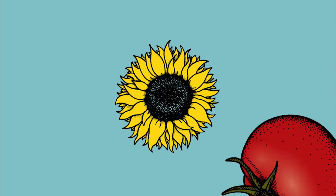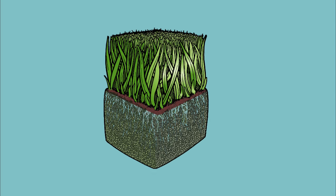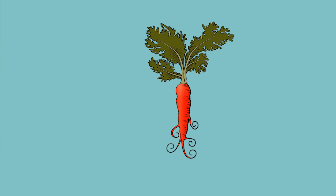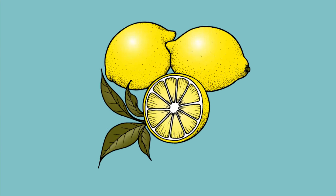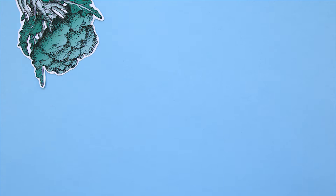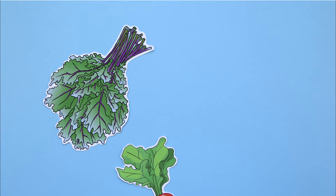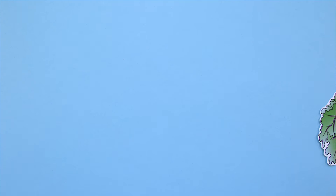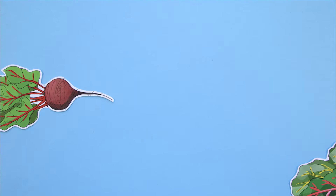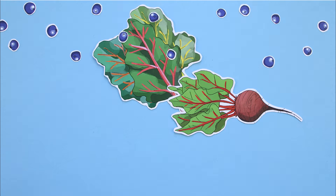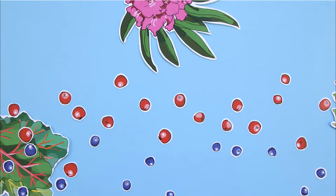Though most commonly grown plants will benefit from mycorrhizal applications, there are a few exceptions. The brassica family, which includes plants such as broccoli, cabbage, radishes, and kale, is one. Beets, chard, blueberries, cranberries, and rhododendron are some others.